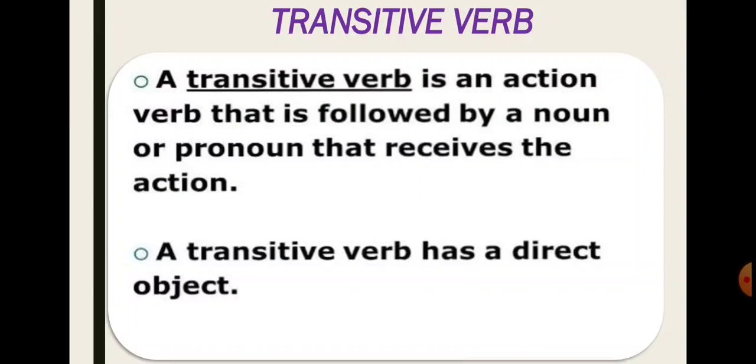Now, what is a transitive verb? A transitive verb is an action verb that is followed by a noun or pronoun that receives the action. A transitive verb has a direct object.